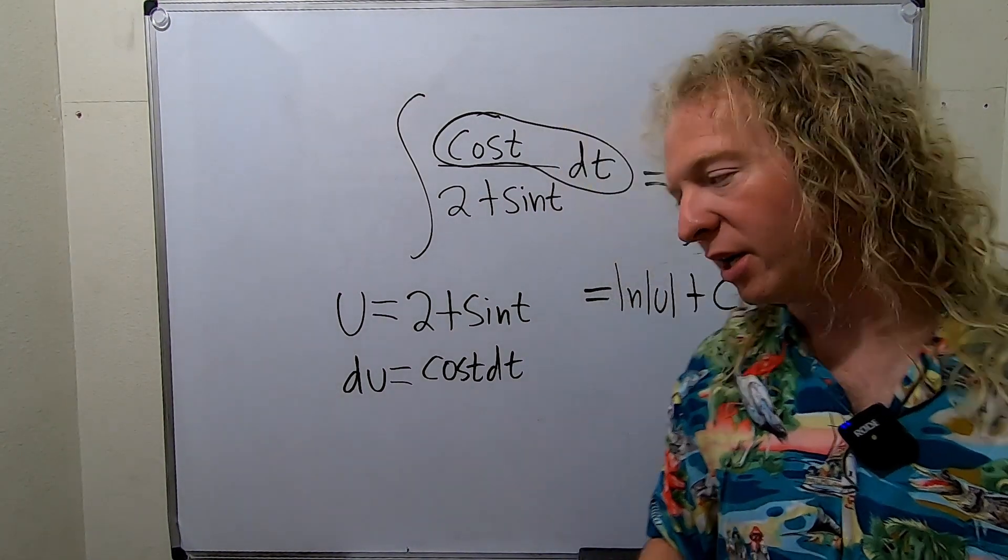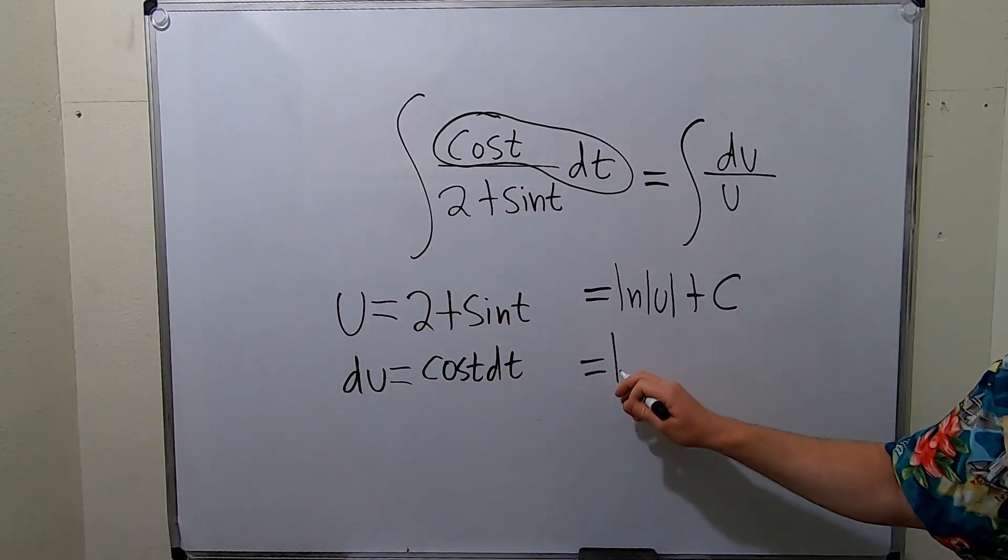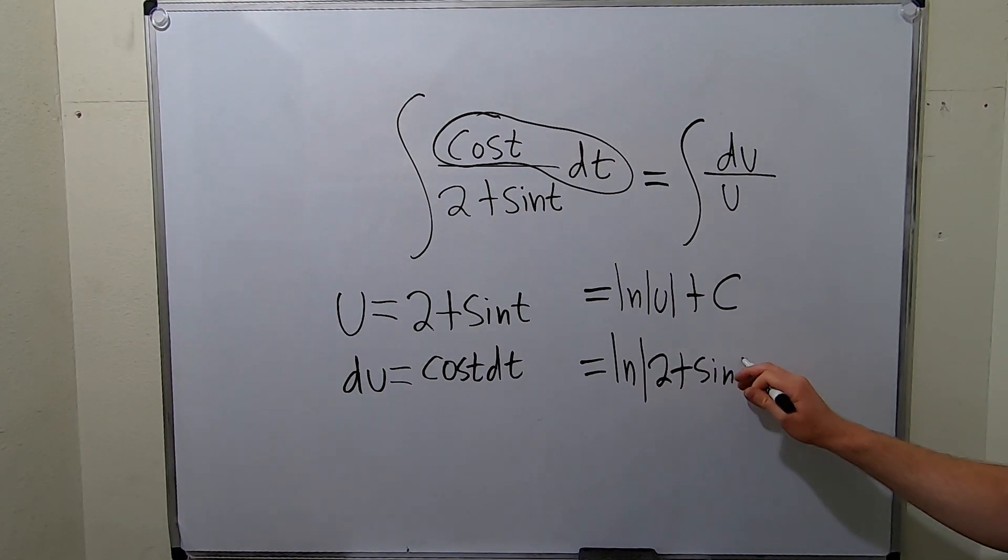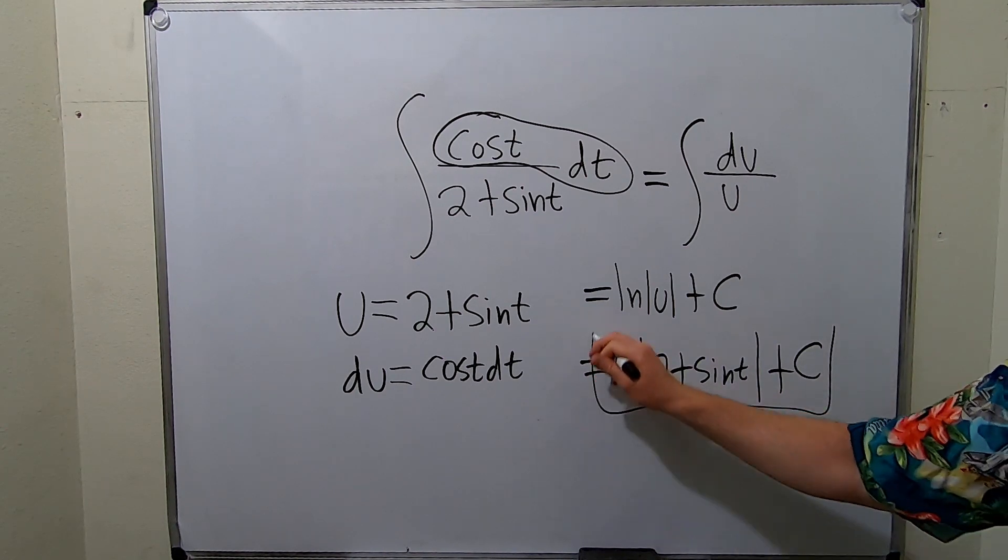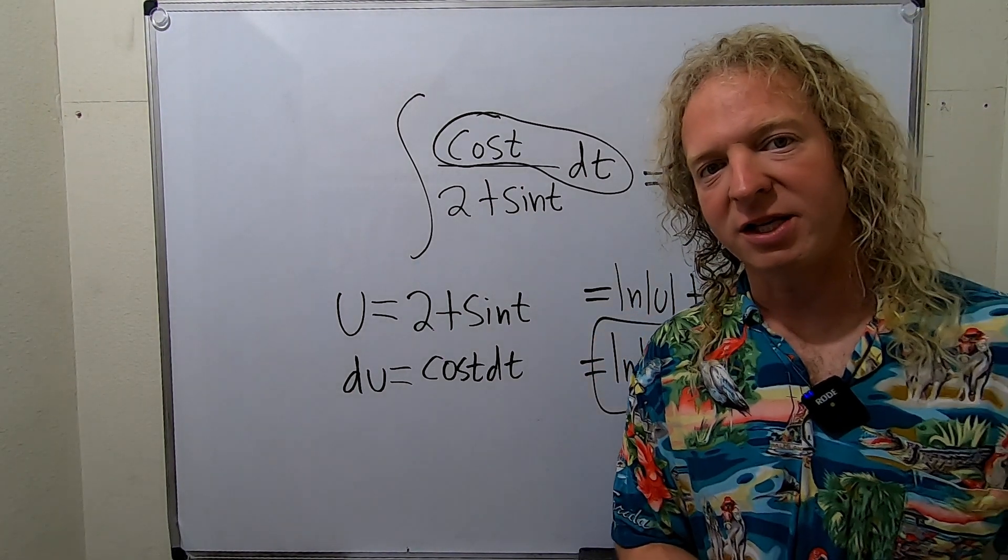The very last thing to do is simply replace u with 2 plus sine t. So this is equal to the natural log of the absolute value of 2 plus sine t. And then we have our plus c, which is our constant of integration. And that is the final answer. I hope this video has been helpful. Take care.